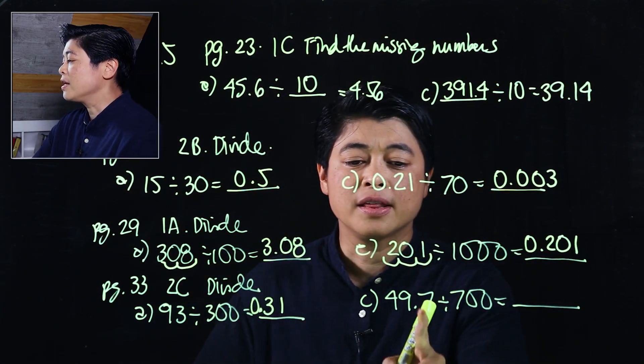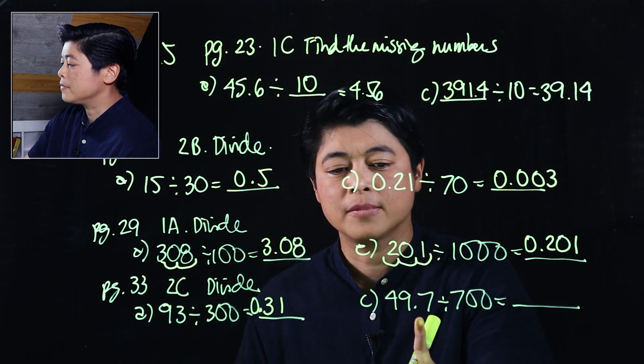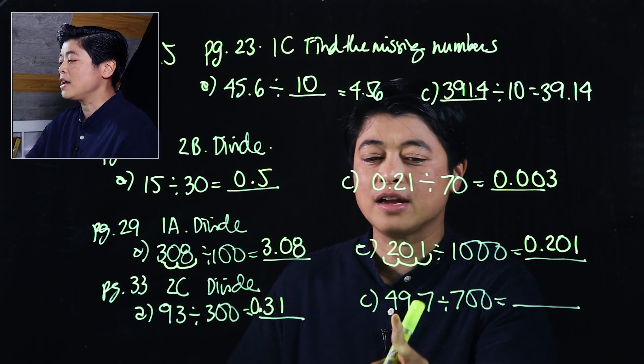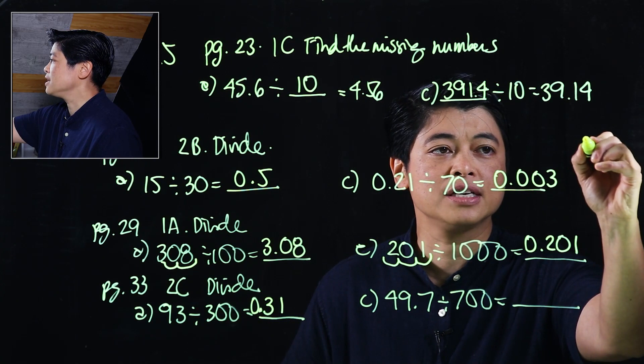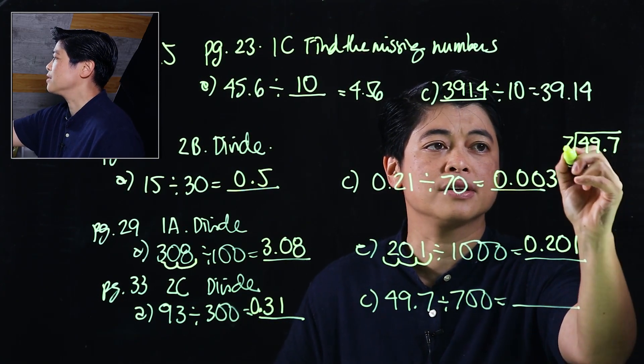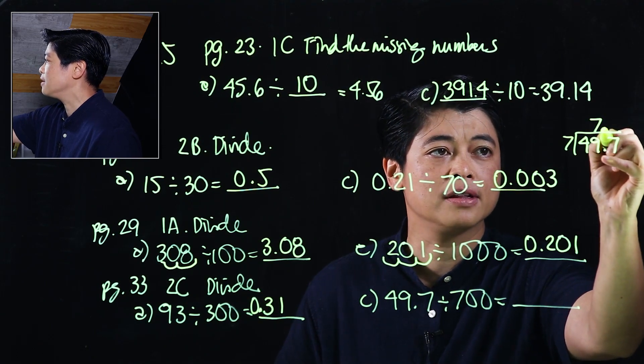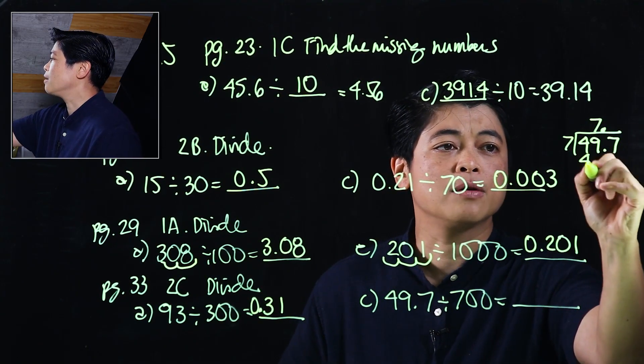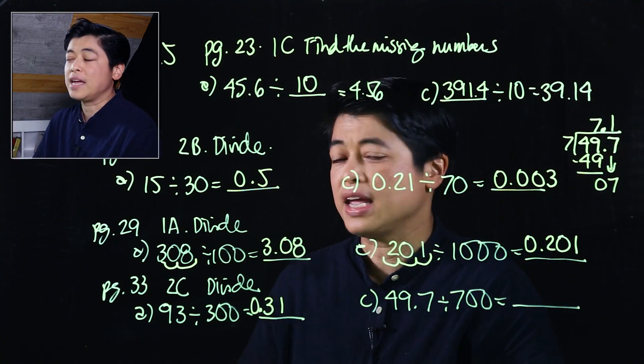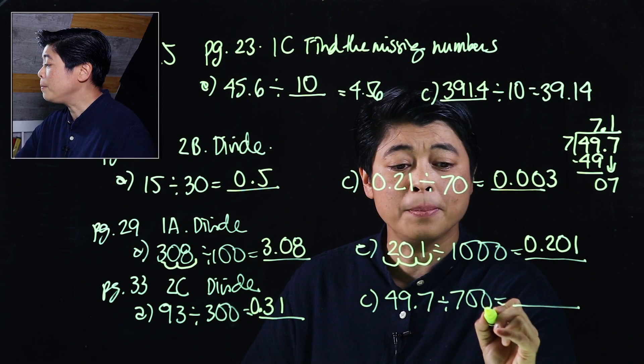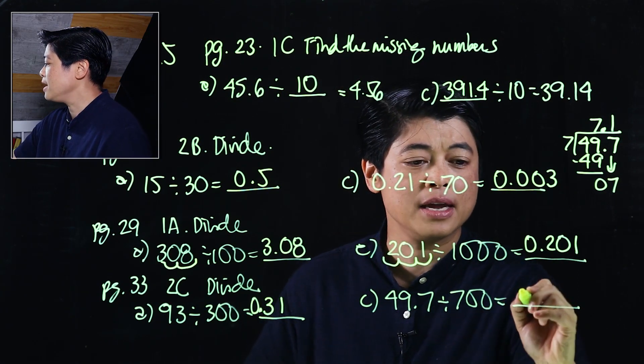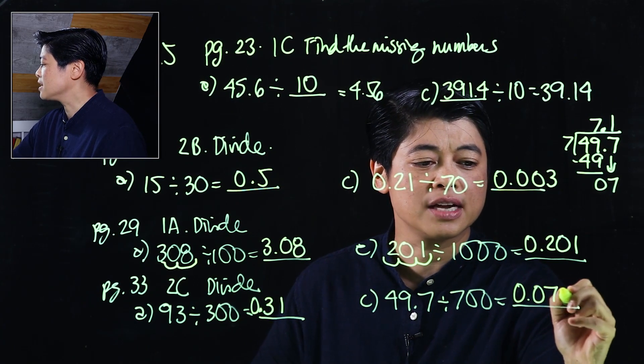Okay, and finally, for this problem, I'm gonna just divide because I can't do it mentally. Or actually, I could, but I'll just show. So this is 49.7 divided by 7. So that will be 7. The decimal is there. That will be 49. Subtract. Bring down 7. 1. Okay, now we need to move two places to the left. So therefore, that will be 0.071.